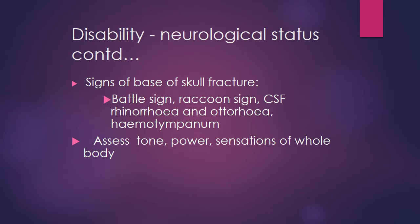Signs of base of skull fractures include the Battle sign, raccoon sign, black eyes, ecchymotic blood in the conjunctiva covering the sclera, CSF rhinorrhoea (CSF mixed with blood from the nose), CSF otorrhoea (CSF and blood from the ear), and haemotympanum seen on otoscopy — blood in the middle ear cavity. These signs indicate severe head injury and the patient must be managed accordingly and transferred to a neurological tertiary care centre.